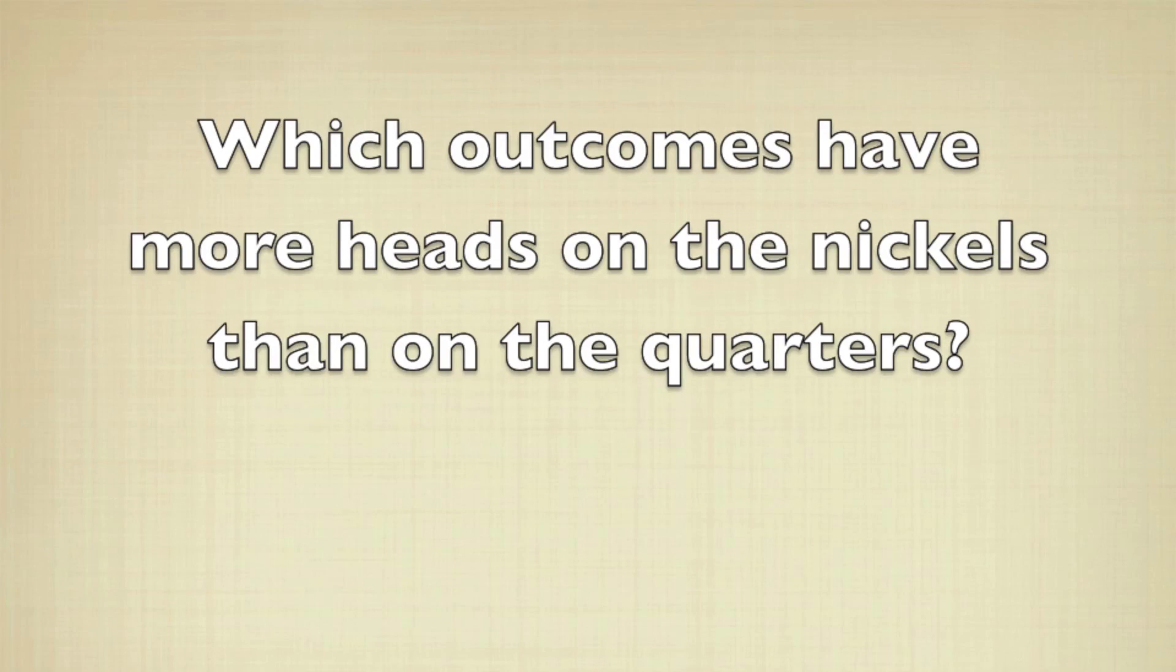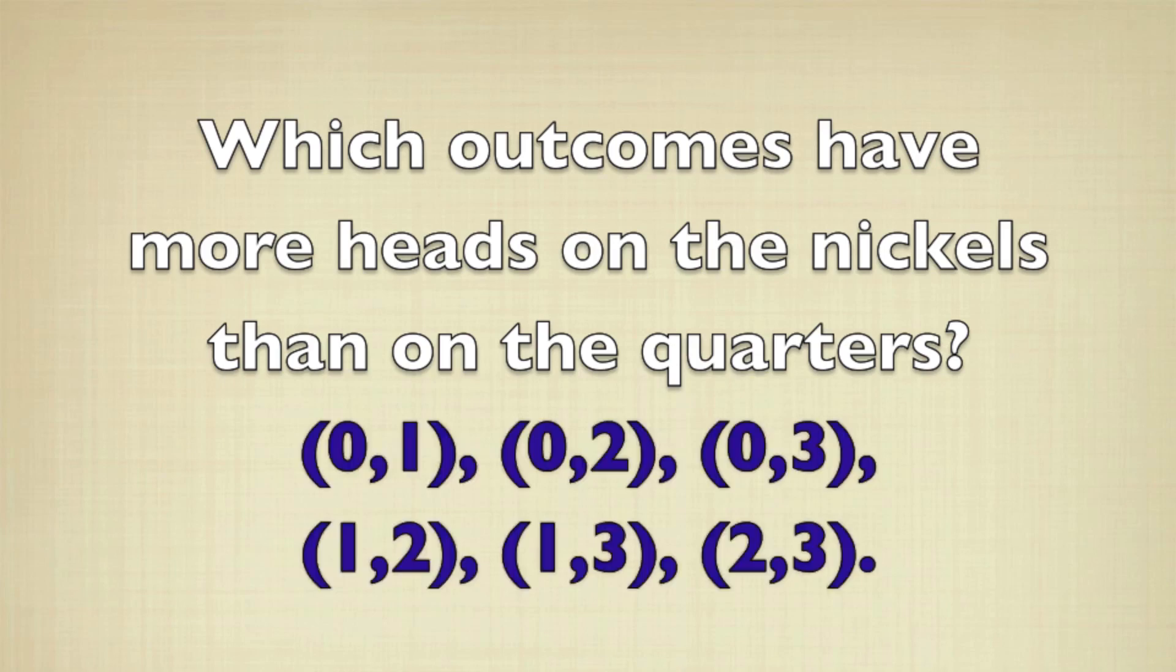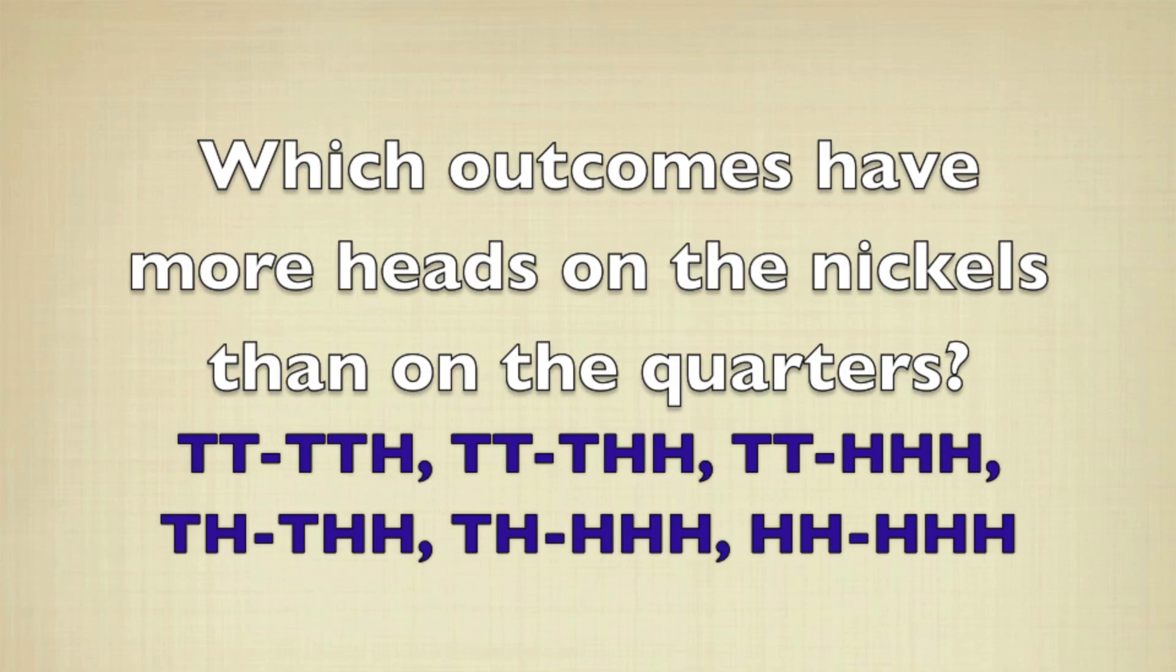Because events can take on any form, we just have to look at one particular example. Which outcomes have more heads on the nickels than on the quarters? To describe the event, we just have to find the outcomes in the sample space that match the event. In one description, it would be these ordered pairs of numbers. In the other description, it would be these outcomes here.